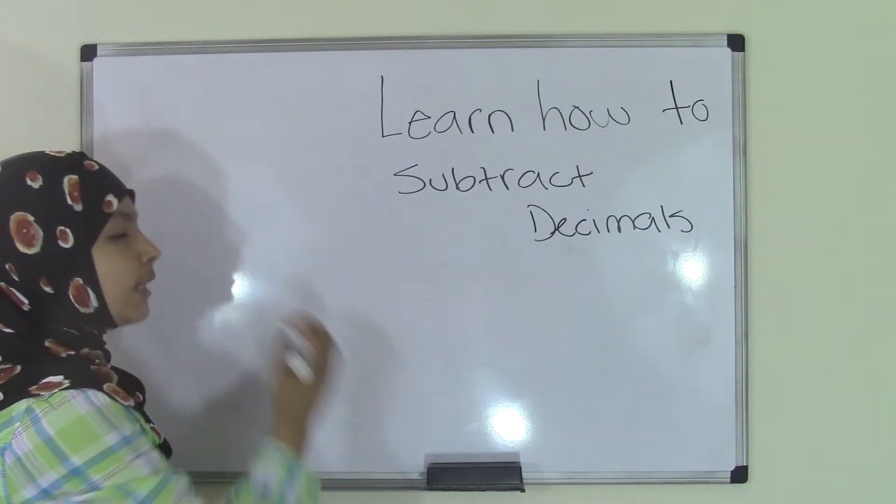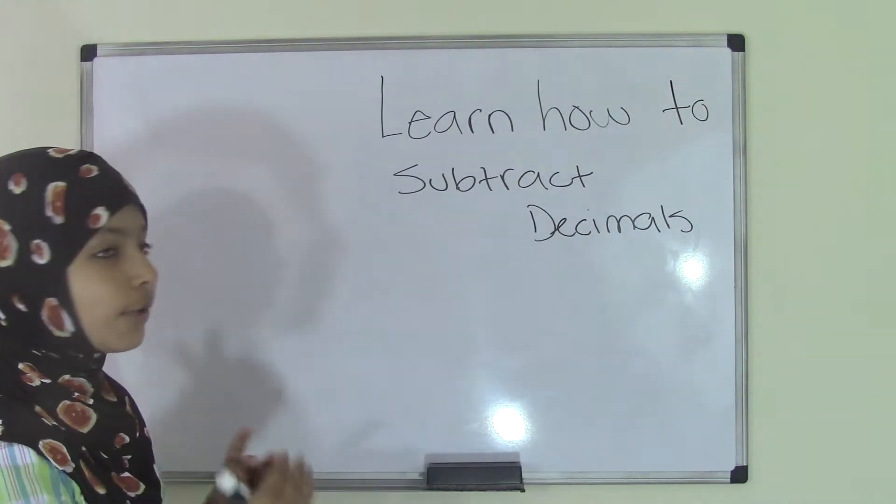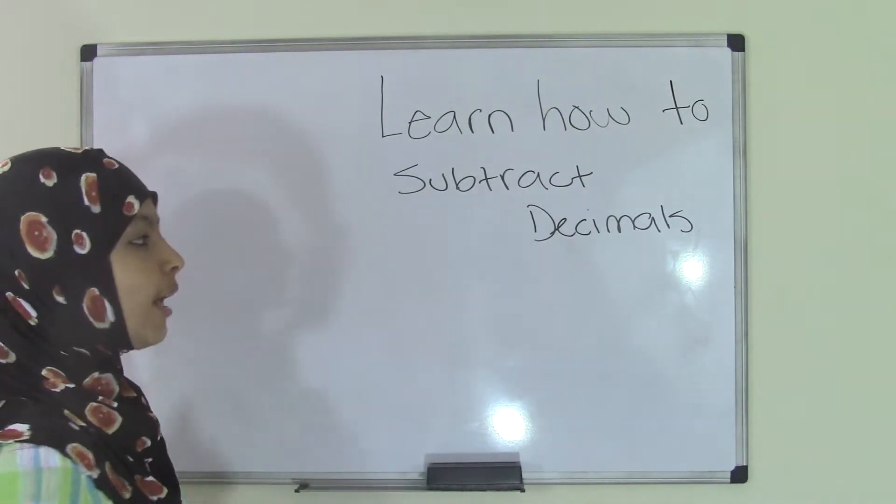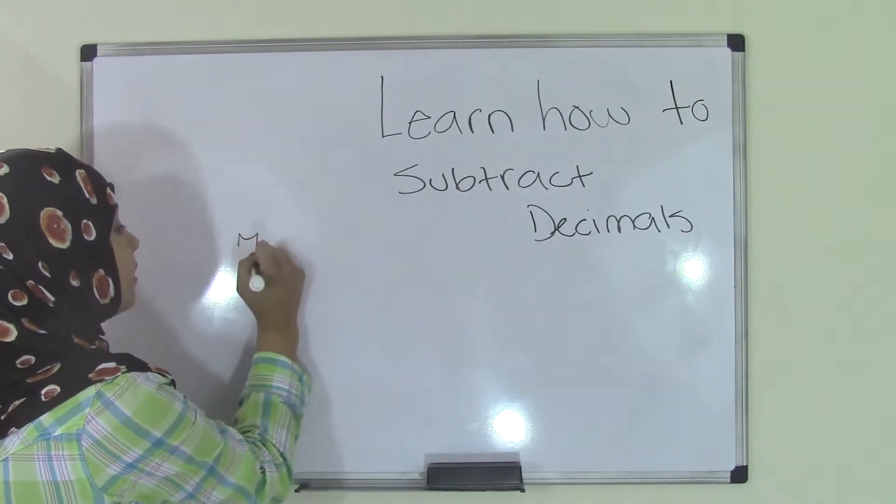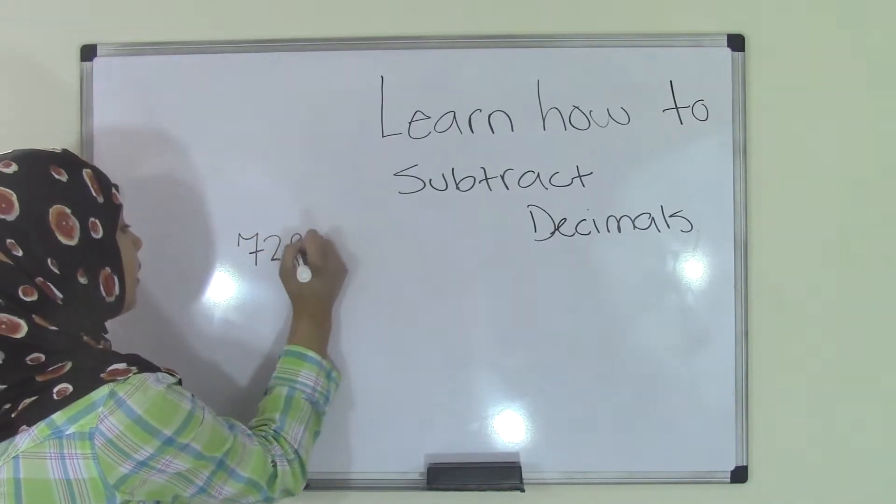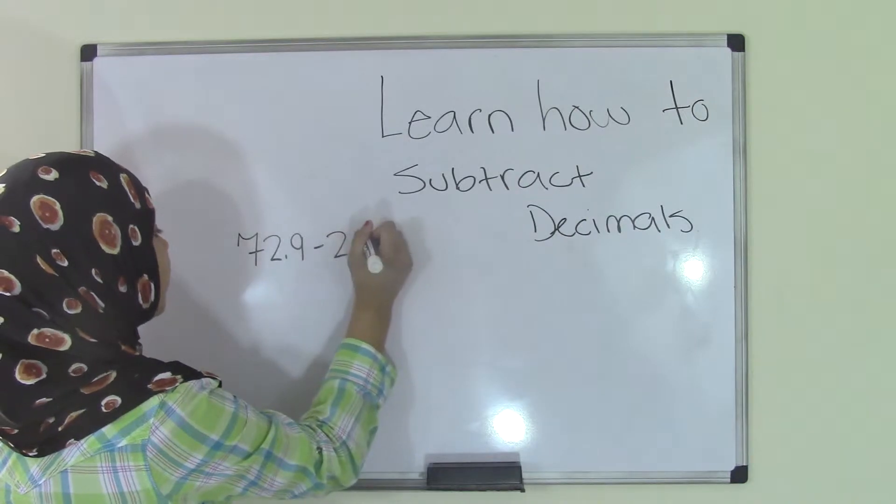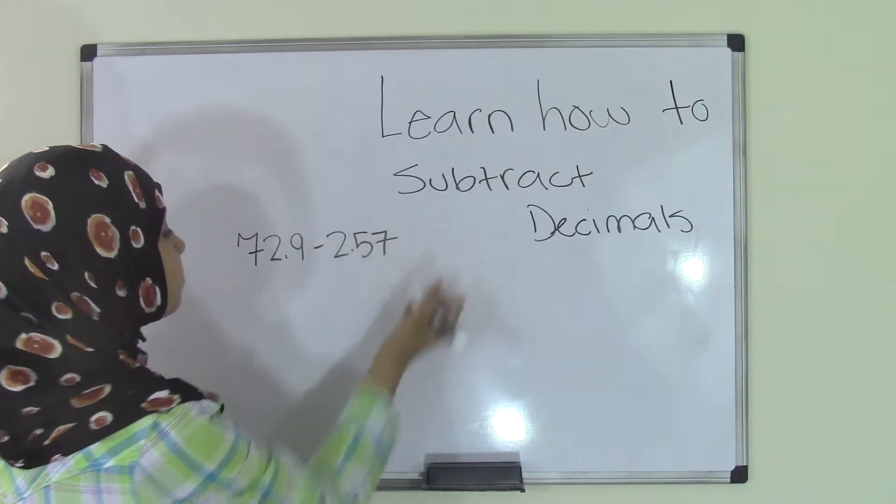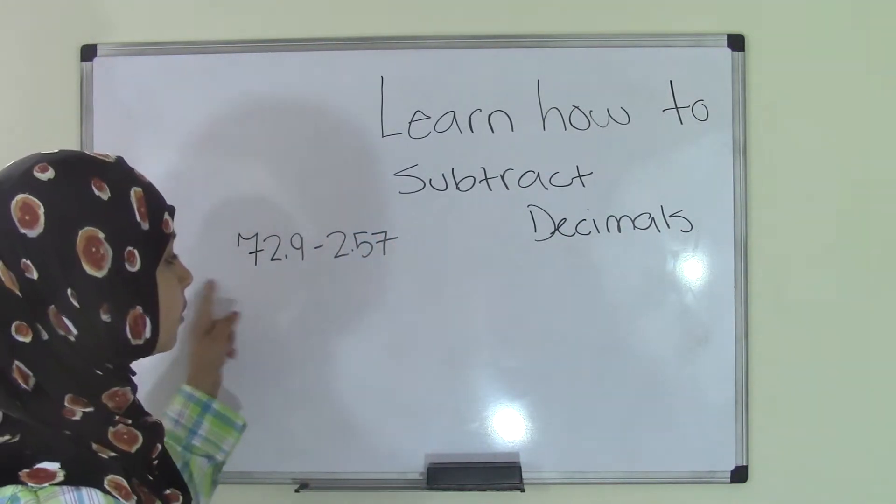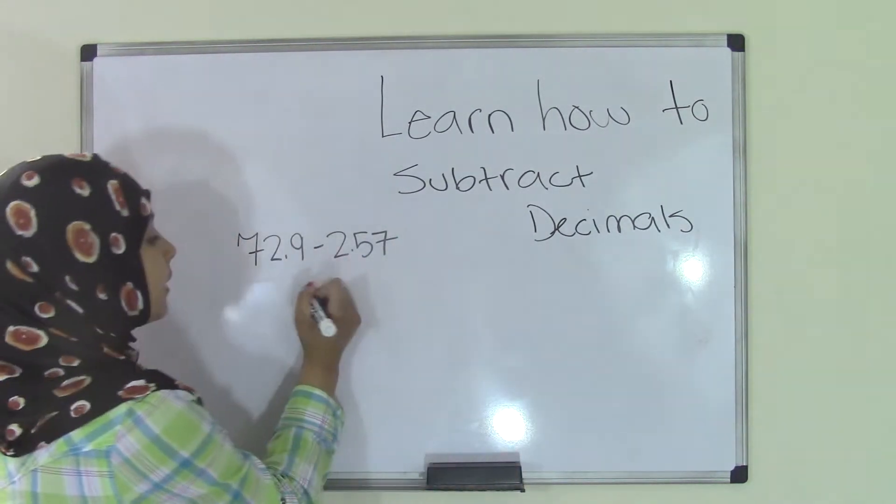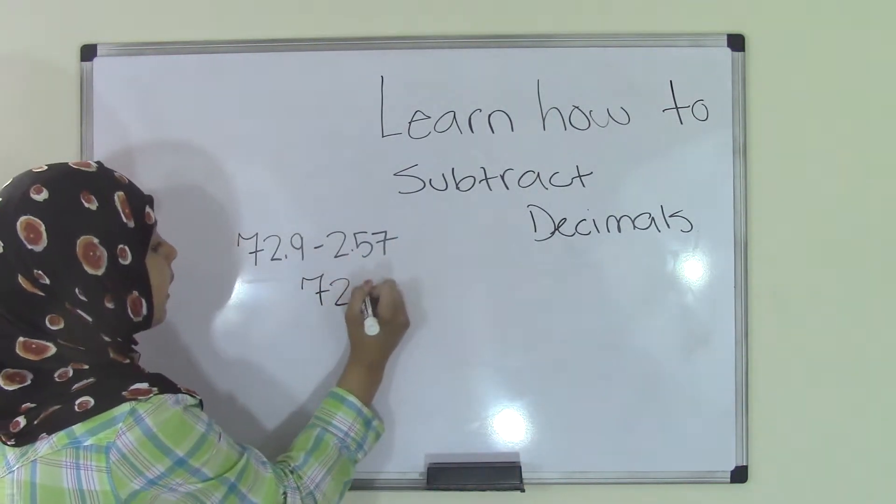For example, most likely you get problems in horizontal form, so it's really important that you rewrite them in vertical form to understand it better. So if you have 72.9 minus 2.57, let's say, it's horizontal form because horizontal goes from left to right. Now you need to put it in vertical form, so you'll just rewrite this as 72.9, and now remember...